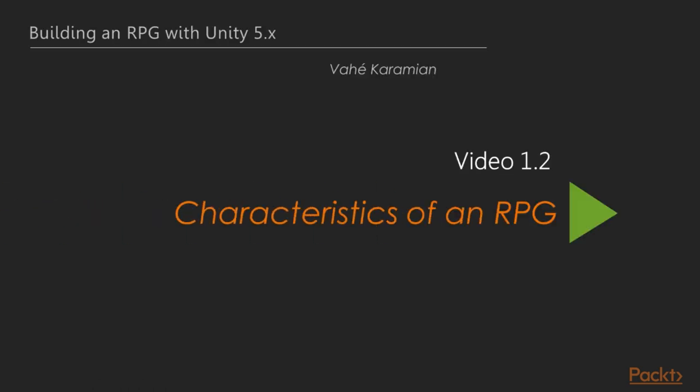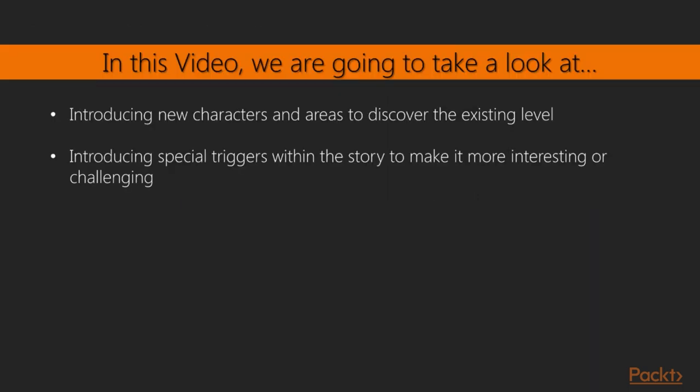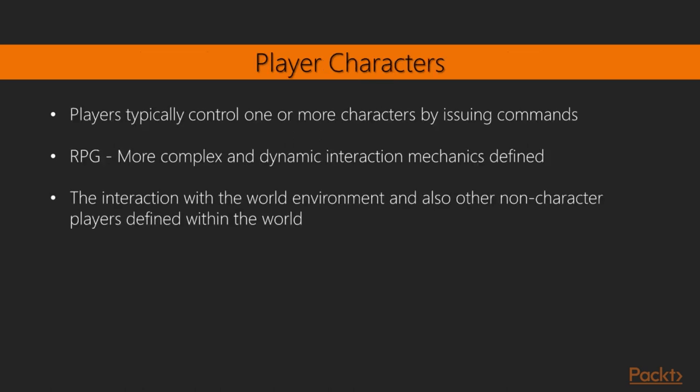In this video on Characteristics of an RPG, we will learn how roleplay video games typically rely on a highly developed story and setting, which is divided into a number of quests or levels. Players typically control one or more characters by issuing commands, which are then performed by player characters based on their defined abilities and attributes.